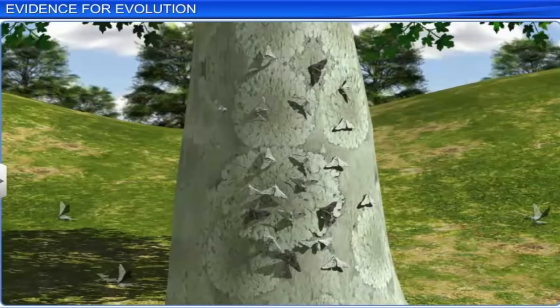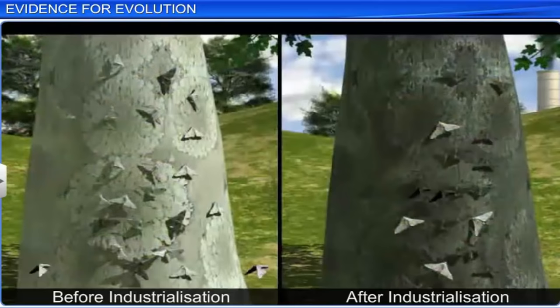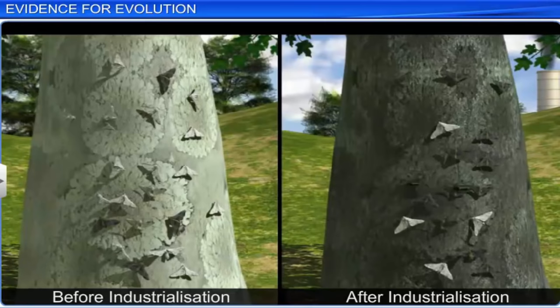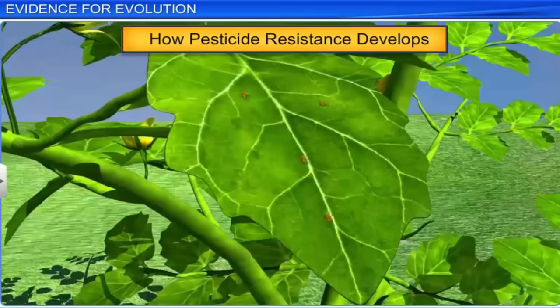However, in rural areas where industrialization had not taken place, the count of dark-winged moths was low. This study proved that in a mixed population, organisms which adapt themselves to the existing environment have better chances of survival and increasing their population size. At the same time, no variant is completely wiped out.